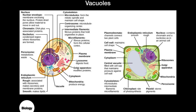Next up we have vacuoles. In the animal cell there will be many small vacuoles throughout the cytoplasm, while plant cells typically have one large central vacuole. Although this image shows only one vacuole in the animal cell, understand there are many smaller vacuoles throughout the cytoplasm. In the paramecium you'll see another type called a contractile vacuole, which we'll discuss more when we talk about cell transport.